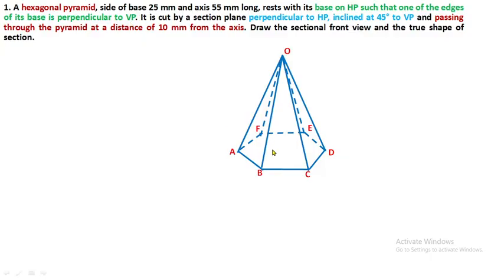Being base on HP, this is the position of the hexagonal pyramid. In the top view we can see the entire hexagon along with the slant edges OA, OB, OC, OD, OE, OF. It is cut by a section plane perpendicular to HP and inclined at 45 degrees to VP, passing through the pyramid at a distance of 10 mm from the axis.